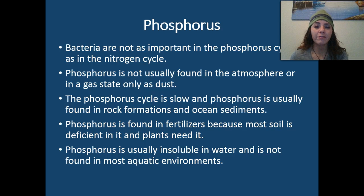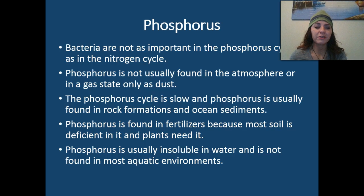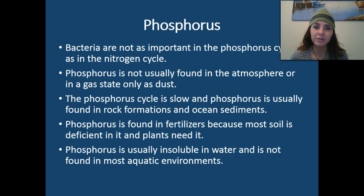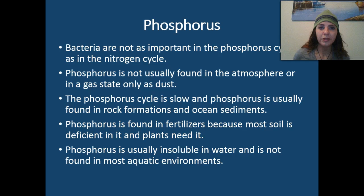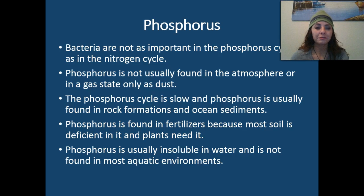The phosphorus cycle is slow, and phosphorus is usually found in rock formations and ocean sediments. Phosphorus is found in fertilizers because most soil is actually deficient in phosphorus and plants need it to grow. That's why we add so much phosphorus into the fertilizers we use for our agricultural crops — whether we're growing corn or soy or anything agriculturally. Phosphorus is usually insoluble in water and is not found in most aquatic environments.